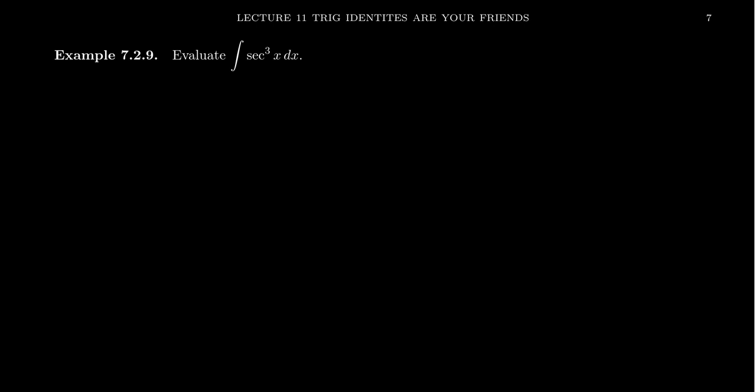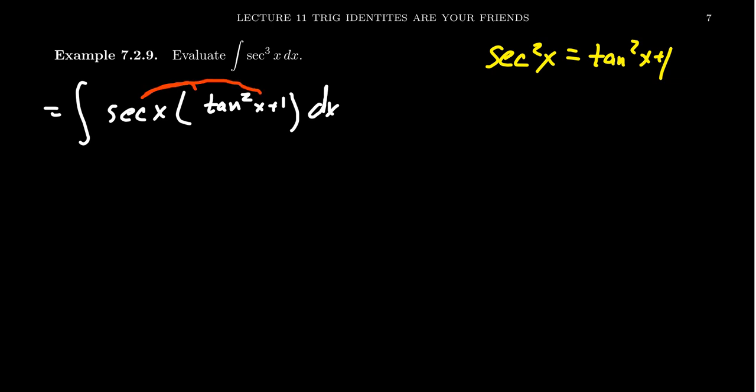We're going to show you how secant cubed works here. We're going to use the fact that secant squared x is equal to tangent squared plus 1. It's best if we have both tangents and secants. So we're going to take two of the secants and replace it as tangent squared plus 1. We're going to have one secant left behind, and then transition the other ones over. Tangent squared x plus 1 dx. Distribute the secant squared like so.